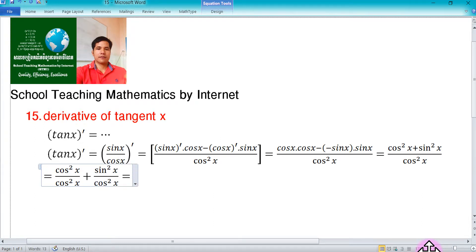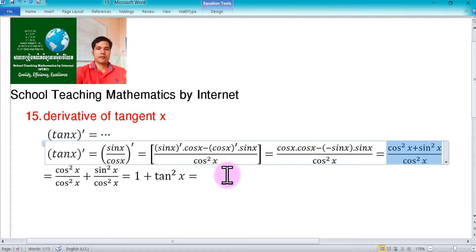And then equal to one plus tangent square x. In this part you need to know that cos square plus sine square is one, so it can be written as one divide cos square x. Thank you very much.